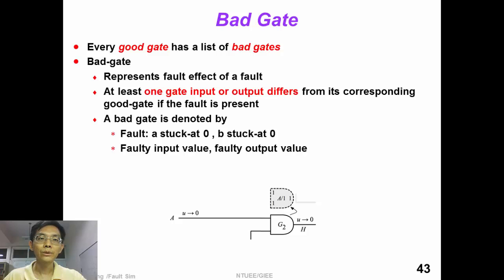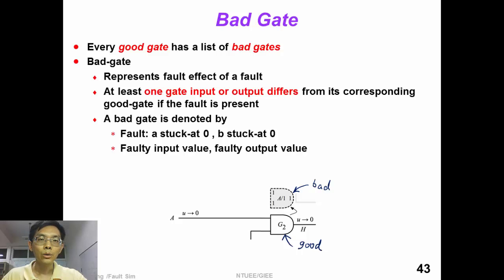In concurrent fault simulation, for every good gate we have a list of bad gates associated with it. For example, in this circuit, G2 is a good gate which has one bad gate associated with it. A bad gate represents the fault effect of a fault. Please note that at least one gate input or gate output is different from its corresponding good gate if this fault is present.